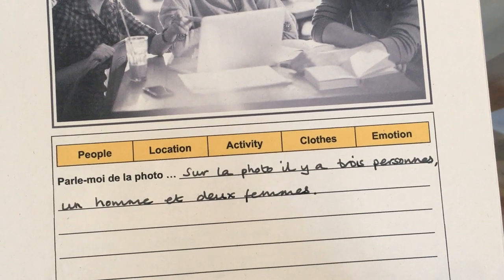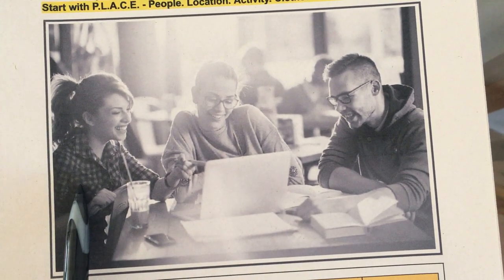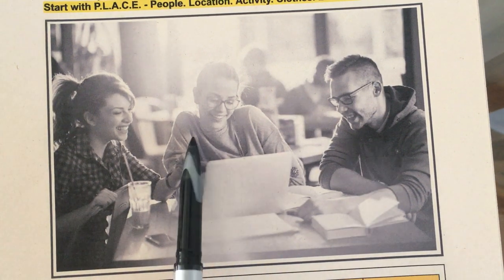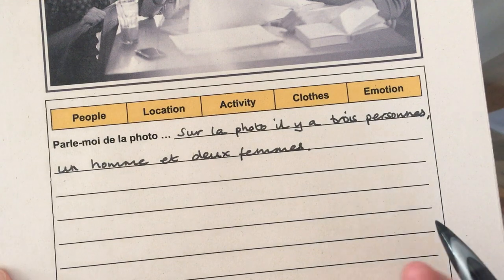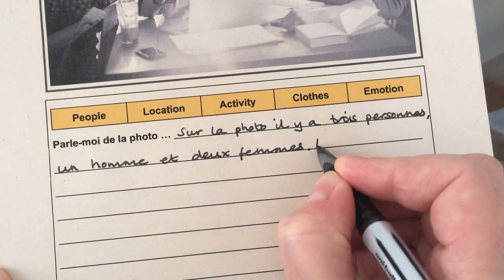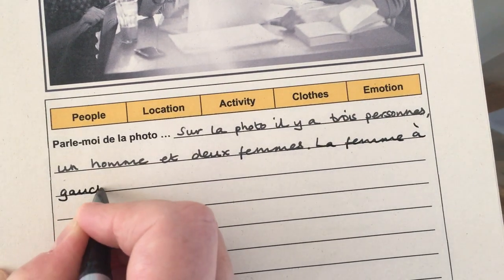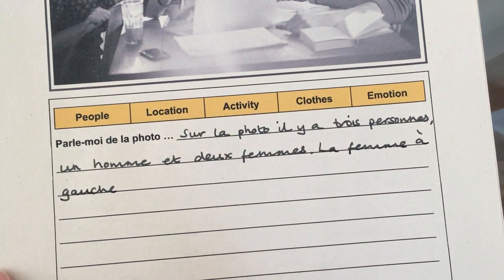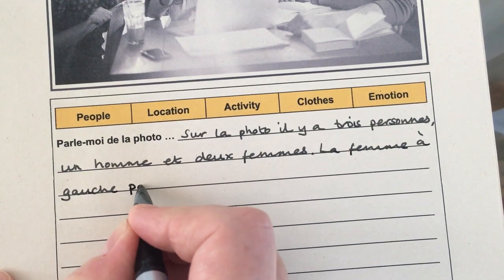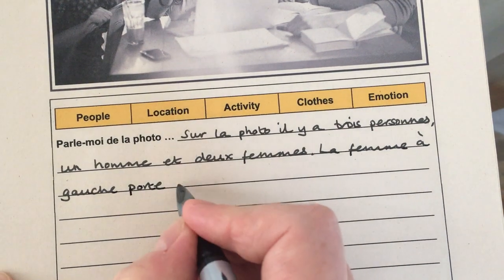Now I'm going to add some detail about their appearance. I'm going to stick to the vocabulary that I know. I'm going to talk about the fact that she is wearing a shirt, these two are wearing sweatshirts, she's got long hair, and these two are wearing glasses. 'La femme à gauche' — so here's my preposition, the woman on the left — I want to say is wearing a shirt. I just use the French present tense 'porte', because that means 'wears' or 'is wearing'. 'La femme à gauche porte une chemise.'